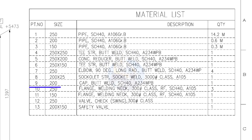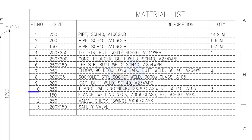Item number 9: cap, butt welded, schedule 40. Quantity: 1. Item number 10: 250 NB, weld neck flange, class 300 pound, raised face, schedule 40. Quantity: 3.